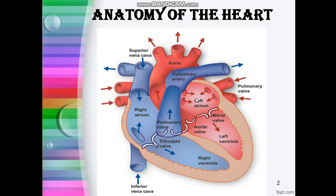Then the blood flows from the left atrium to the left ventricle through the open mitral valve. After reaching the left ventricle, the blood leaves through the aortic valve into the aorta and out to the body. This is how the heart functions continuously.